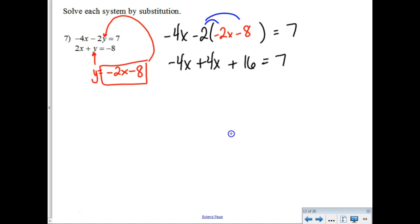This is where all the algebra 1 kids freak out, because they're like, Ah, my x is cancelled. So just trust in the math, guys. The x's do cancel, but you end up with the statement 16 equals 7. What is your math trying to tell you? Does 16 equal 7? No. So what's your solution? No solution.